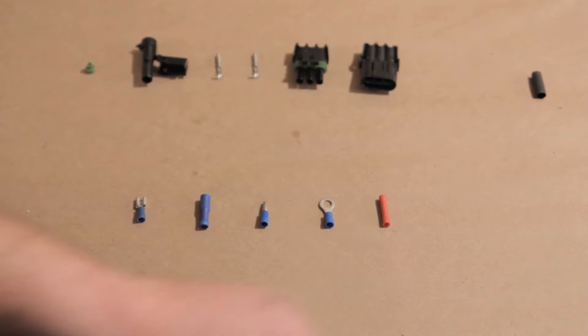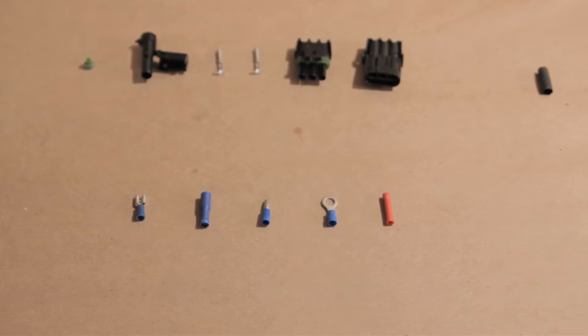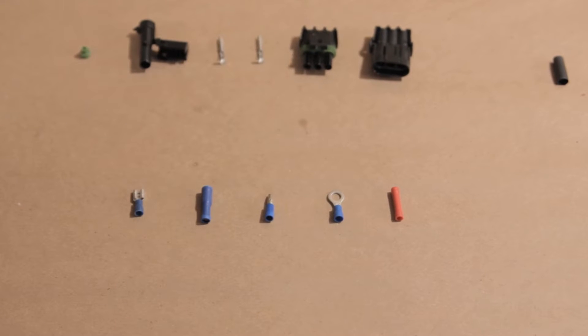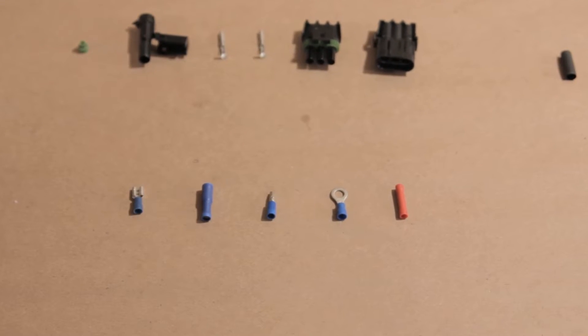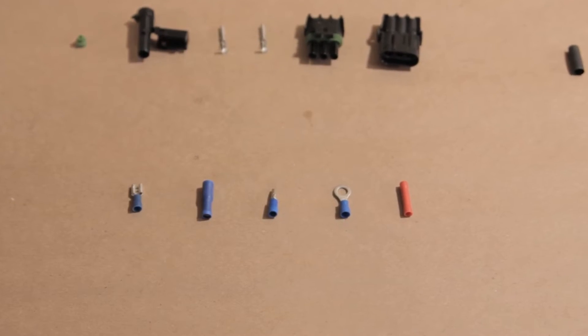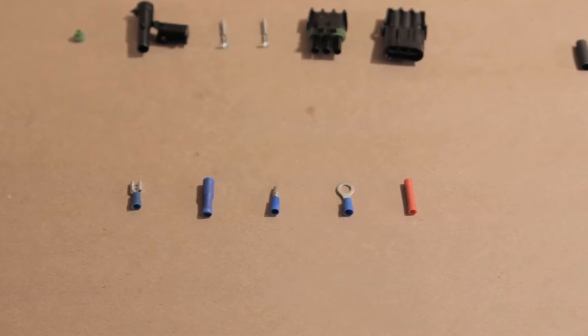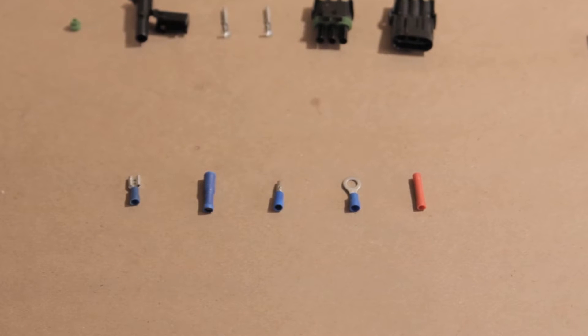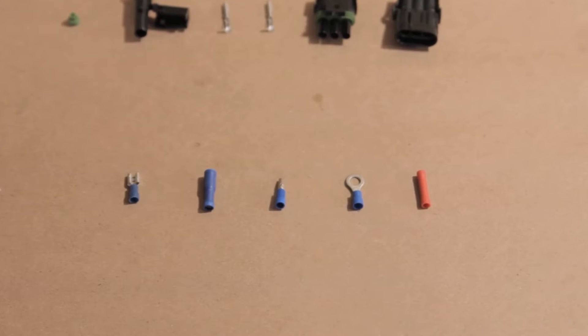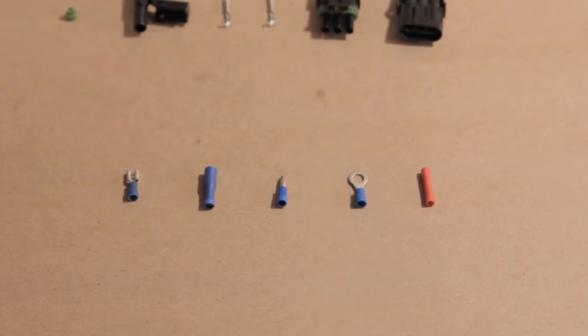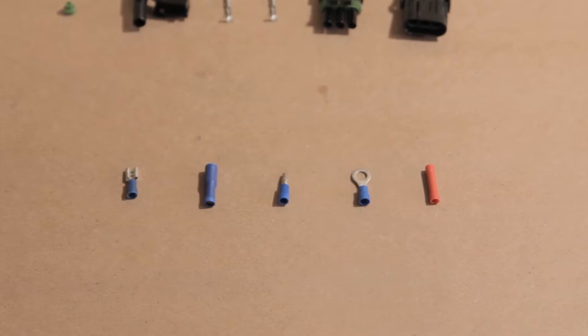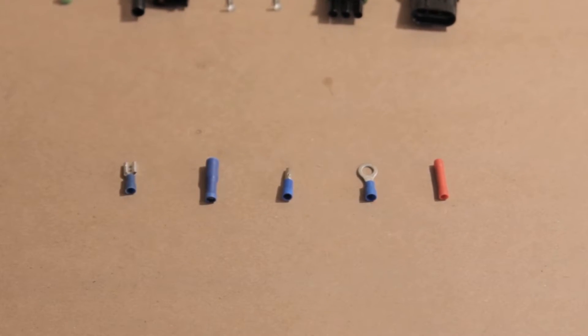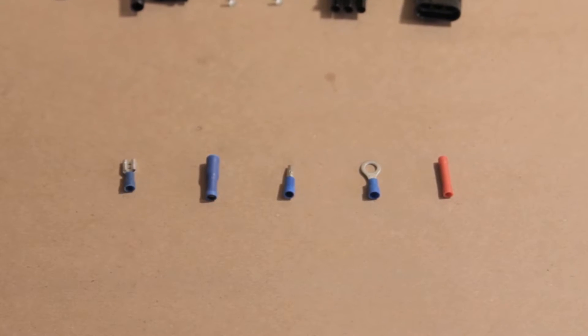These are typical crimp-on connectors that I'm sure you're familiar with. These are really the types of things that you're going to want to avoid. The problem with them is they tend to corrode, work their way loose, and when you crimp them onto the wire, they really don't make a very good connection between the terminal and the wire, and they can create high resistance. If you're working with circuits that are relatively low voltage, the resistance created by these types of terminals can actually skew the readings from sensors and actually affect the way the car runs. So you really want to avoid these things.